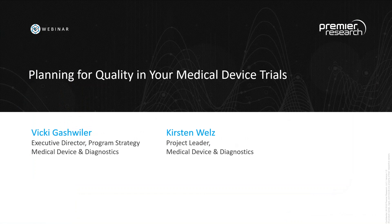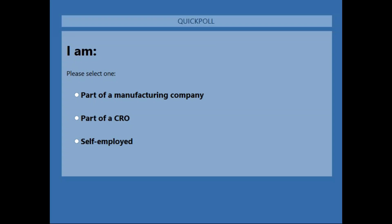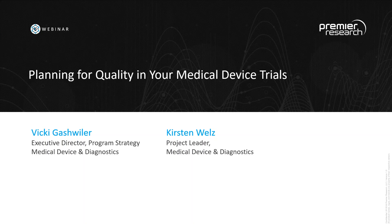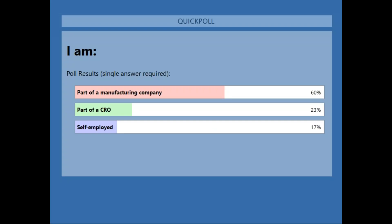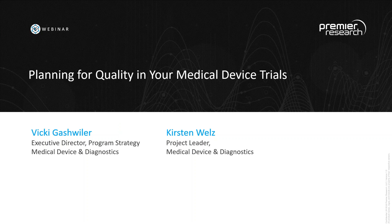Before we get started, I'd like to launch a polling question. You can vote in real time by clicking on your screen. The question is: are you part of a manufacturing company, part of a CRO, or self-employed? The results show 60% are part of a manufacturing company, 23% are part of a CRO, and 17% are self-employed. Thanks everyone for voting.